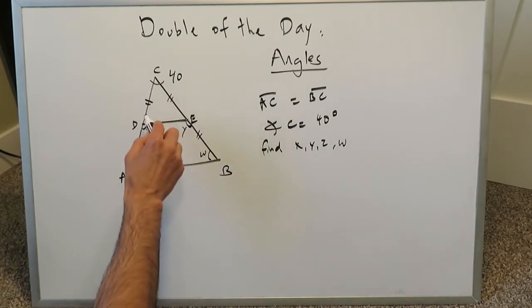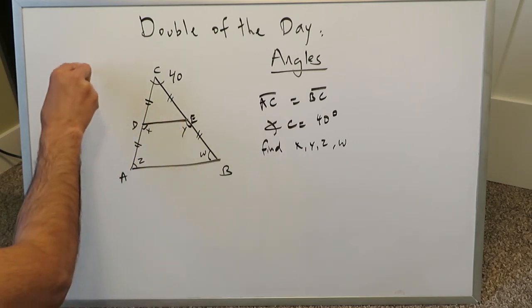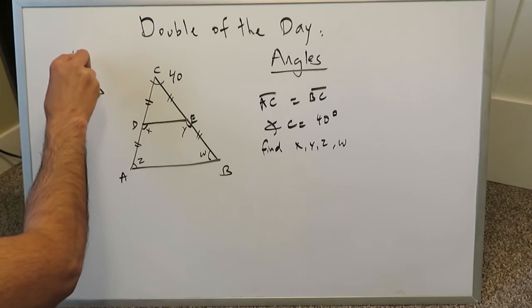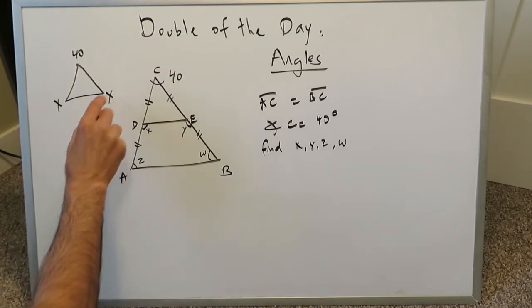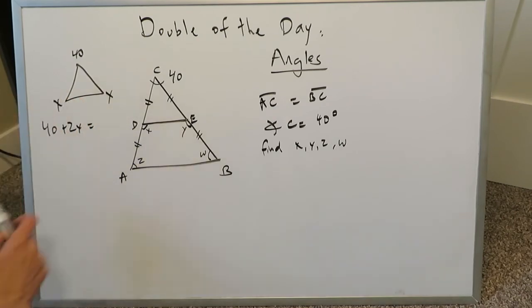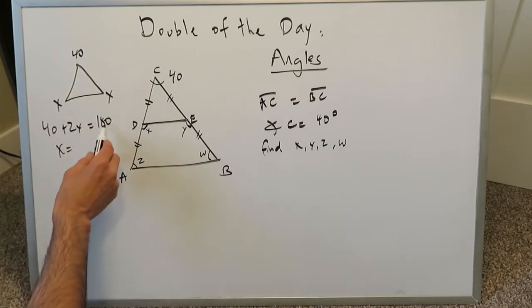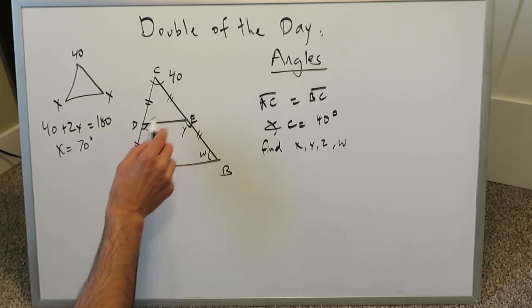If this is 40, you can easily determine the other two angles of this smaller triangle, and let's draw it out over here. We have a 40. We have an X here and an X here. 40 plus 2X, because all the angles of a triangle equal 180, you can solve for this X. X is equal to 140 divided by 2, 70 degrees. So we know these angles here are 70 degrees.